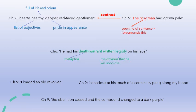Here's the annotation I've done for that quote. You've got a list of adjectives, some terminology, and points about him being full of life and colour, taking pride in his appearance. You can go through all of those quotes and do that — it should take you about 10 minutes.